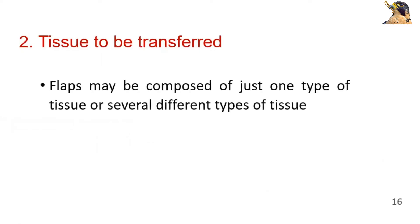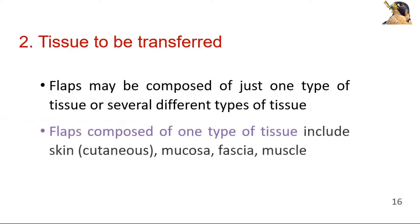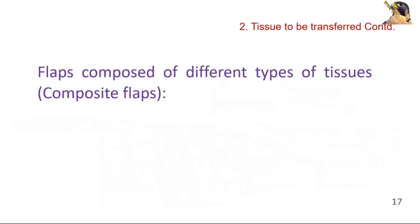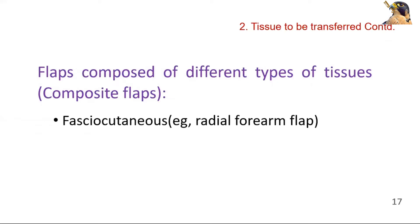Tissue to be transferred: which type of tissue is transferred in a flap? That may define one type of flap. For example, skin, mucosa, fascia, muscle. If it is composed of different types of tissues, it is a composite flap.